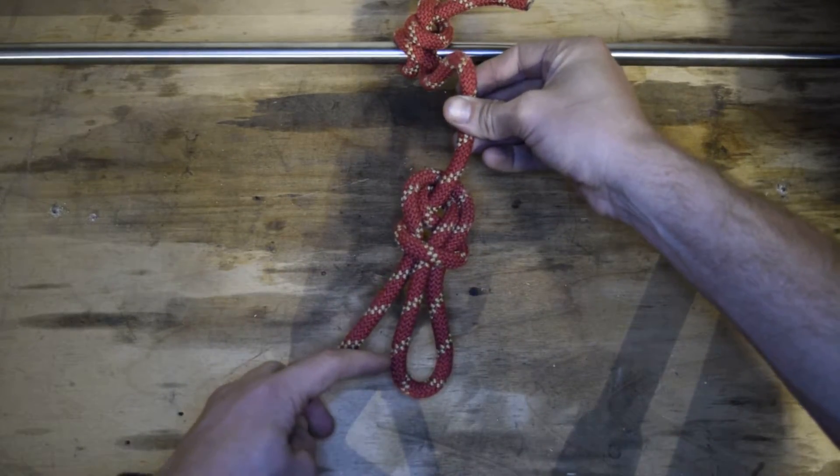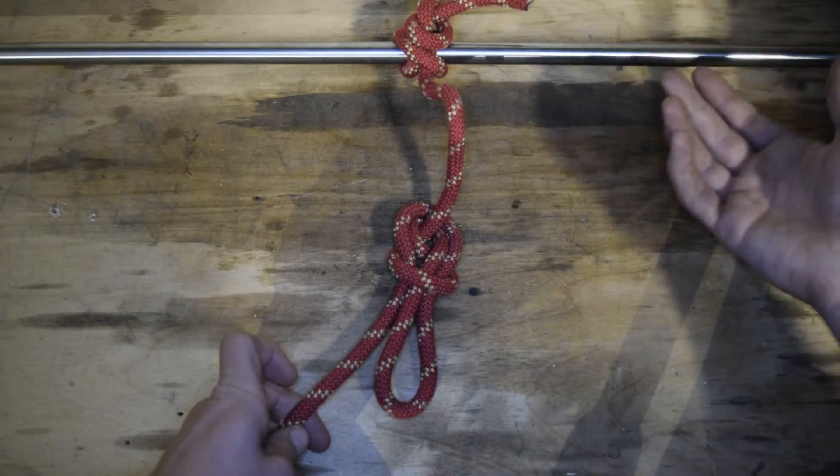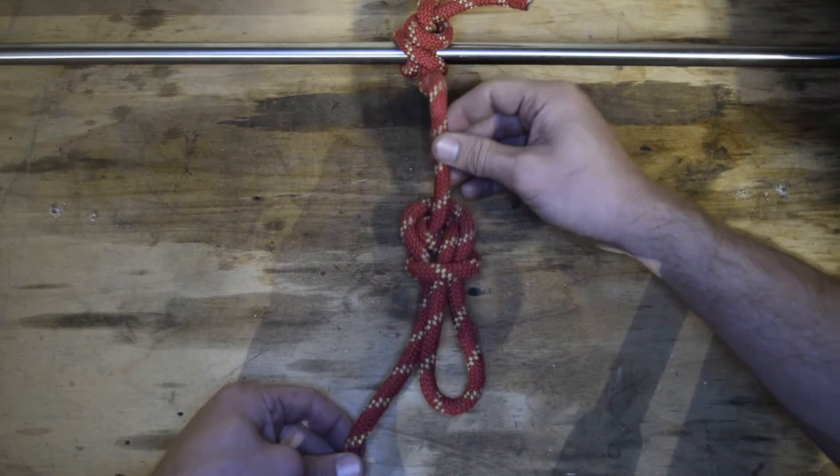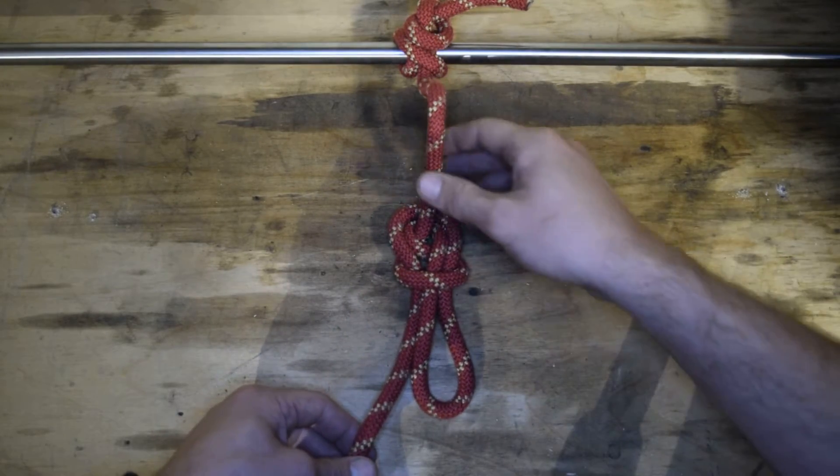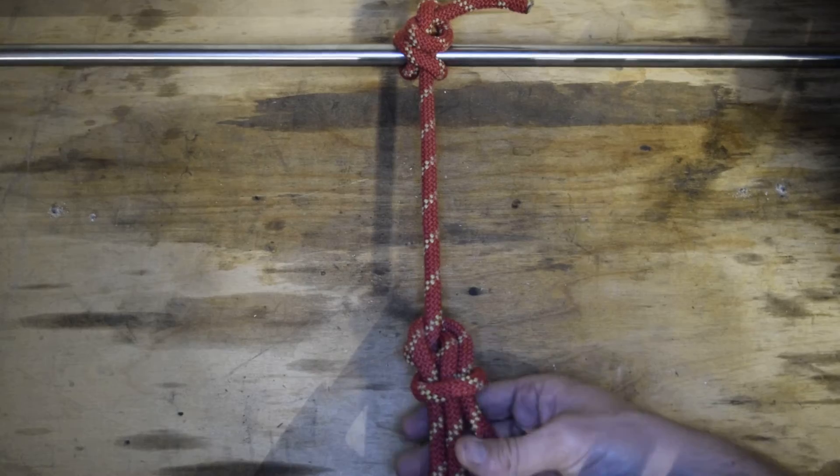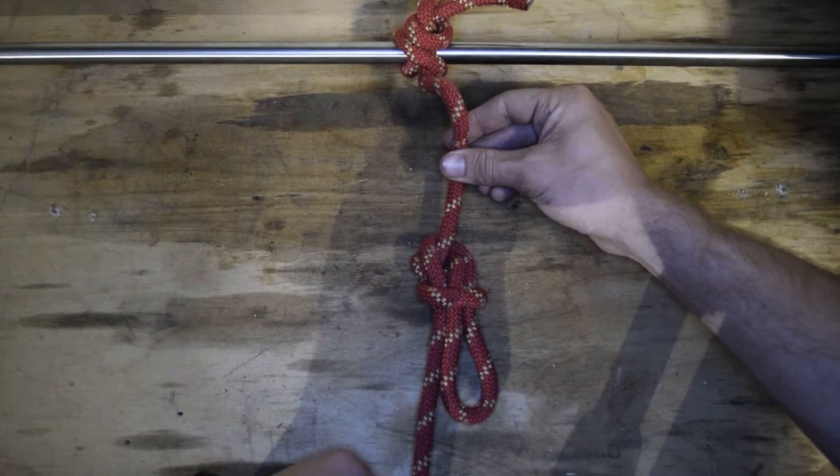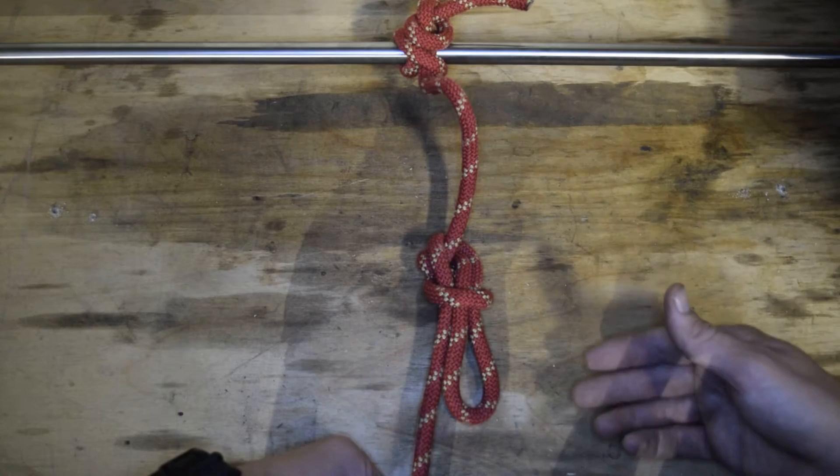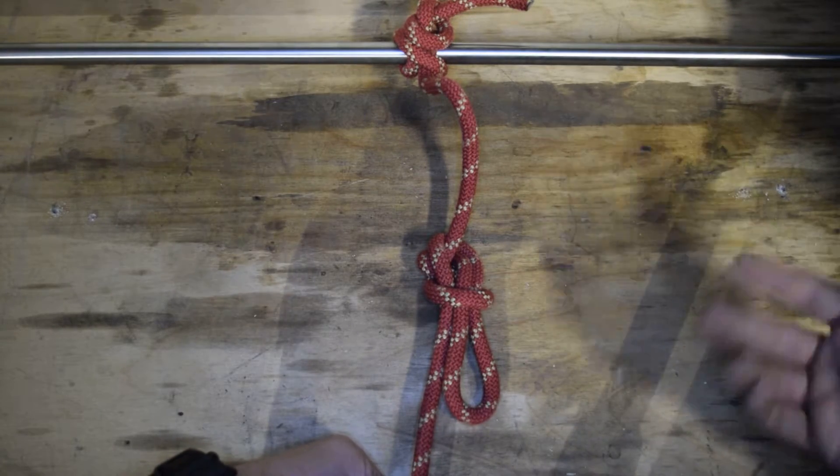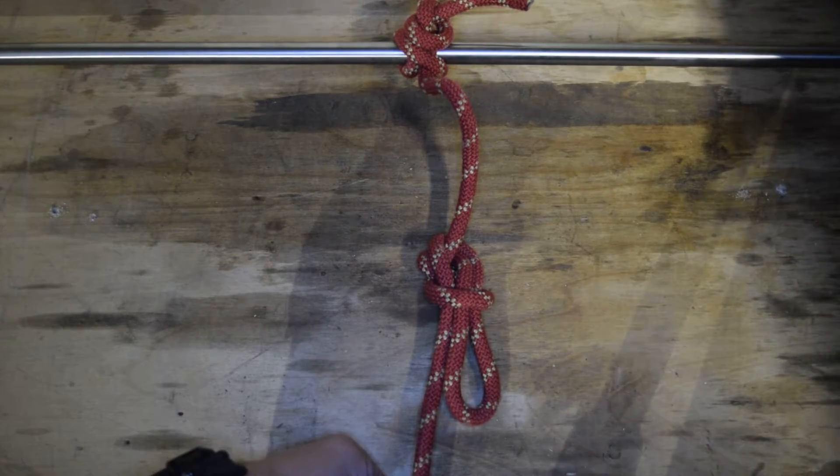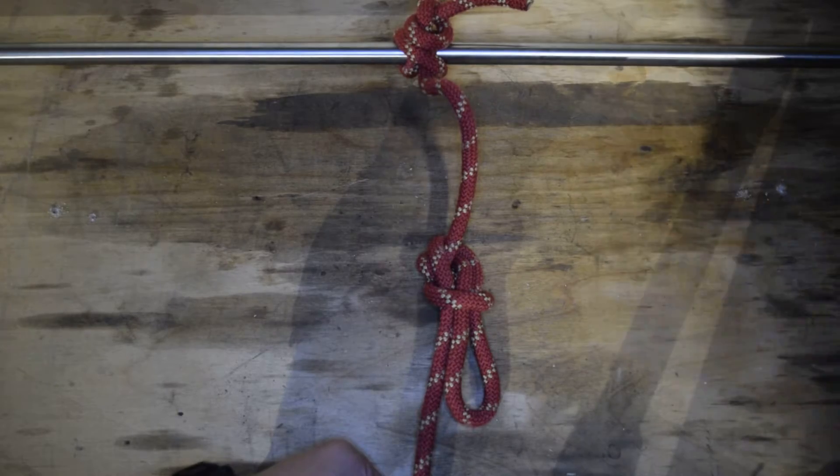Then I have my inline figure 8, or what's also known as a trucker's hitch. But here we have the inline figure 8. I can just pull this, you can tighten it down, and that's your inline figure 8. Part of our test is being able to tie figure 8 in both directions.